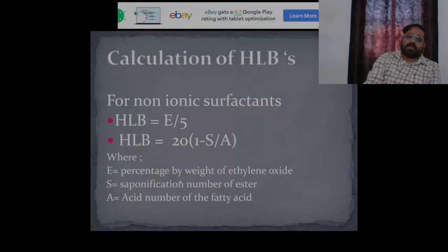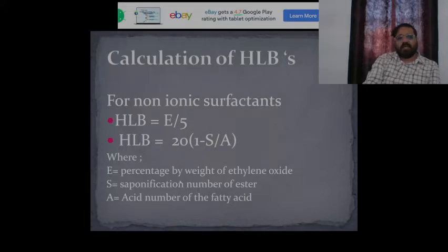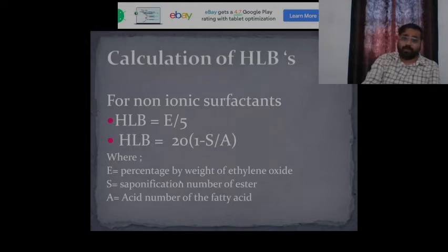The HLB calculation methods include: HLB = E/5, where E is the percentage by weight of ethylene oxide. Another formula is HLB = 20 × (1 − S/A), where S is the saponification number and A is the acid number of the fatty acid.